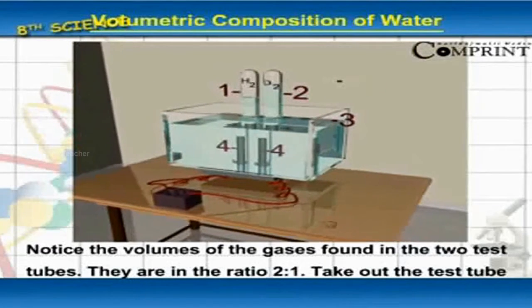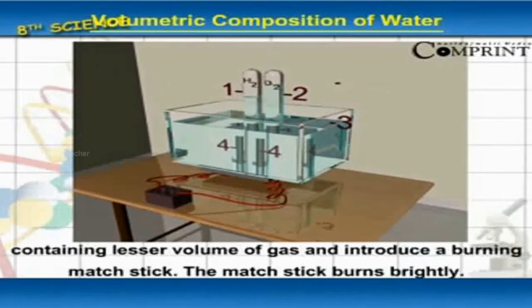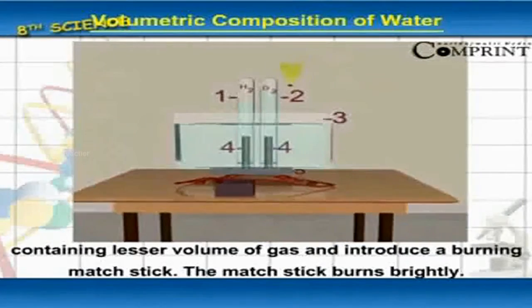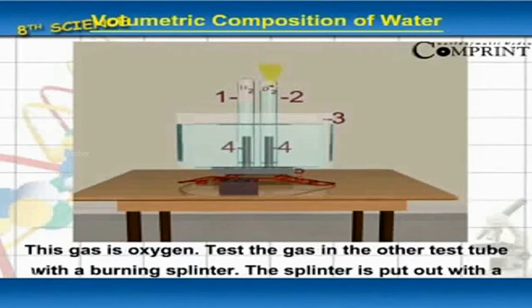They are in ratio 2 is to 1. Take out the test tube containing lesser volume of gas and introduce a burning matchstick. The matchstick burns brightly. This gas is oxygen.